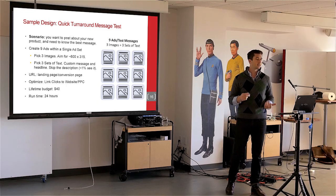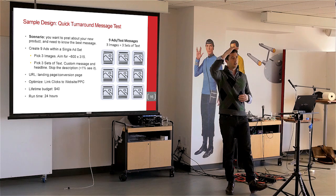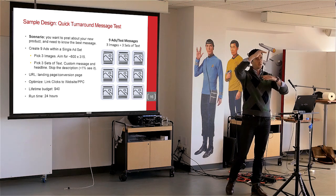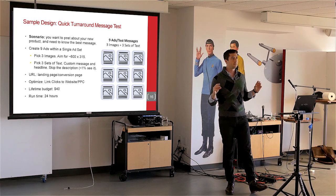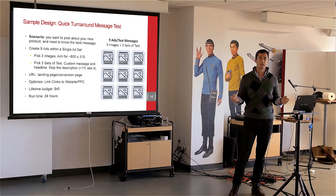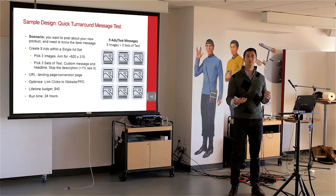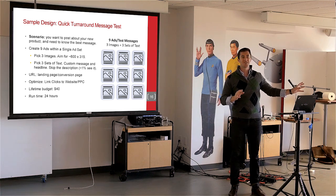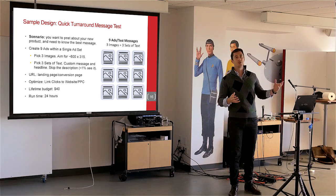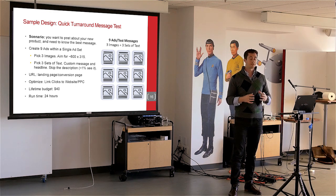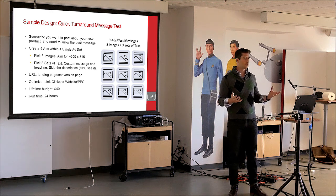You're going to pick three sets of text. You'll have the custom message at the top of the post, which is a little bit more personal and friendly. Then you'll have the headline below the image. You can also put a description below that, but very few people will ever see the description, so I recommend skipping it. Descriptions don't show up on mobile, and Facebook pushes everything on mobile for the most part. If you do want to only push on desktop, you can do that, but performance won't be as good and the test will take longer.